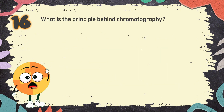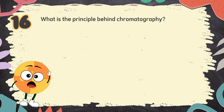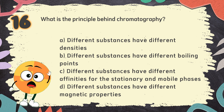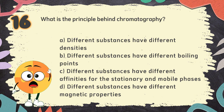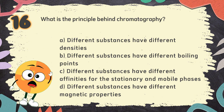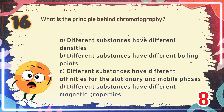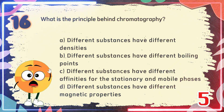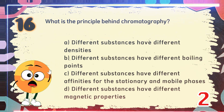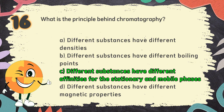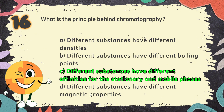Number 16. What is the principle behind chromatography? The choices are: A. Different substances have different densities. B. Different substances have different boiling points. C. Different substances have different affinities for the stationary and mobile phases. D. Different substances have different magnetic properties. The correct answer is C.